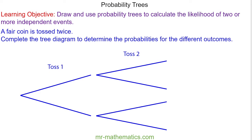Hello and welcome to our lesson on probability trees. There are a couple of keywords we need to know before we can progress. The word AND in probability means multiply, and the word OR in probability means add. We'll refer to these as and when we need them.